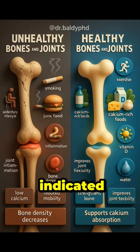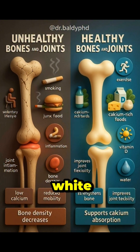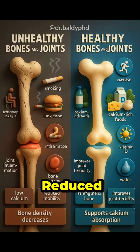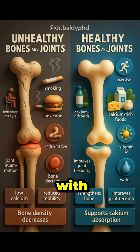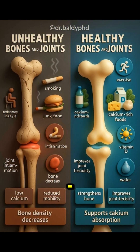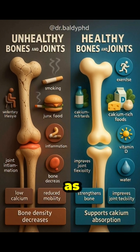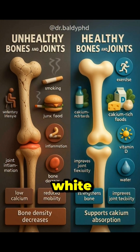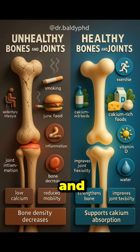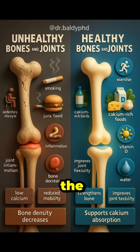Low calcium levels are indicated by a brown box with white text, reduced mobility is represented by a person with a cane, and bone density decreases are shown as a brown box with white text. The right side of the image highlights the positive effects of a healthy lifestyle on bones and joints.